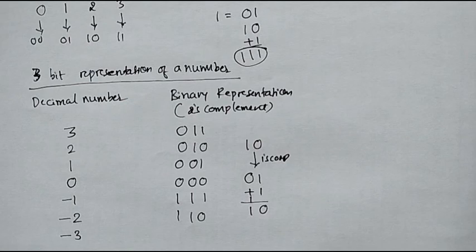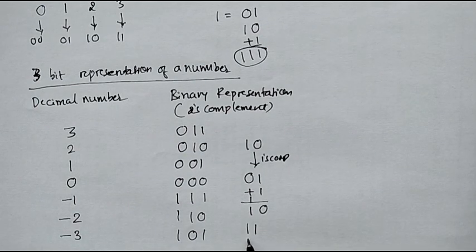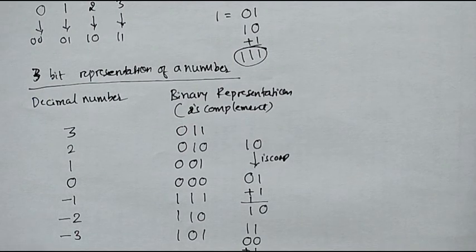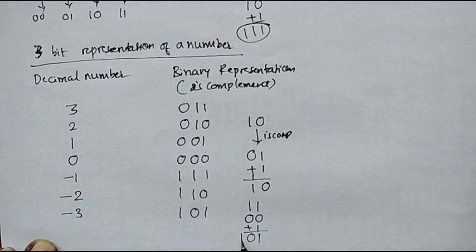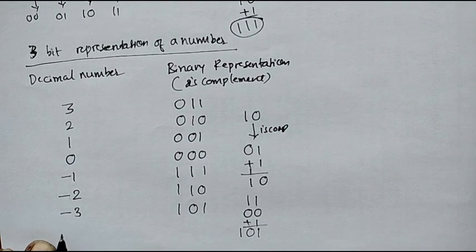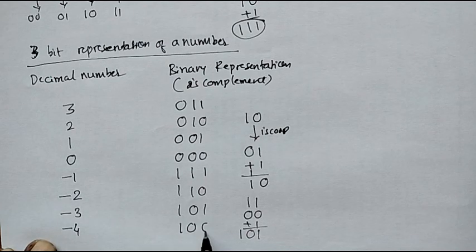Similarly, minus 3 can be represented as 101. Since 3 is represented as 11, the one's complement is 00. Adding 1 gives 01, and since the number is negative, we append 1 to the prefix, so minus 3 is 101. And minus 4 can be represented as 100.